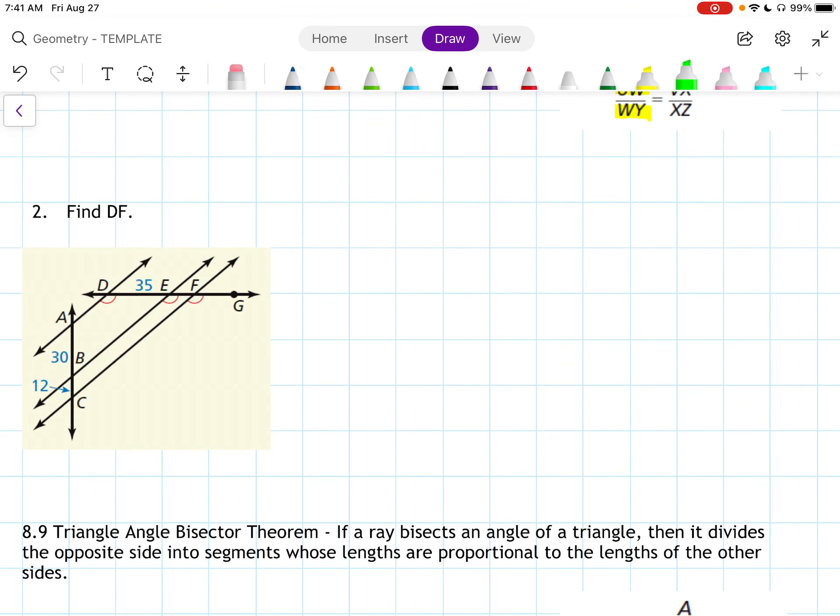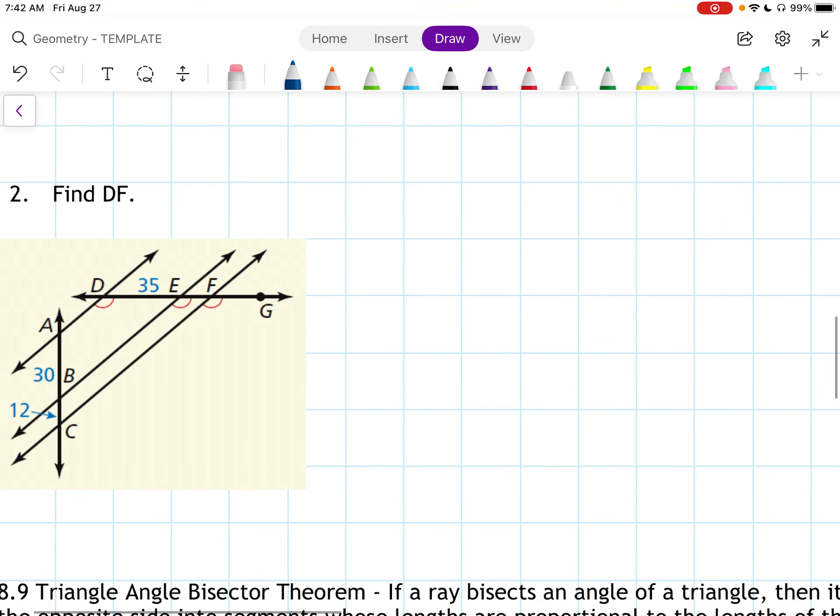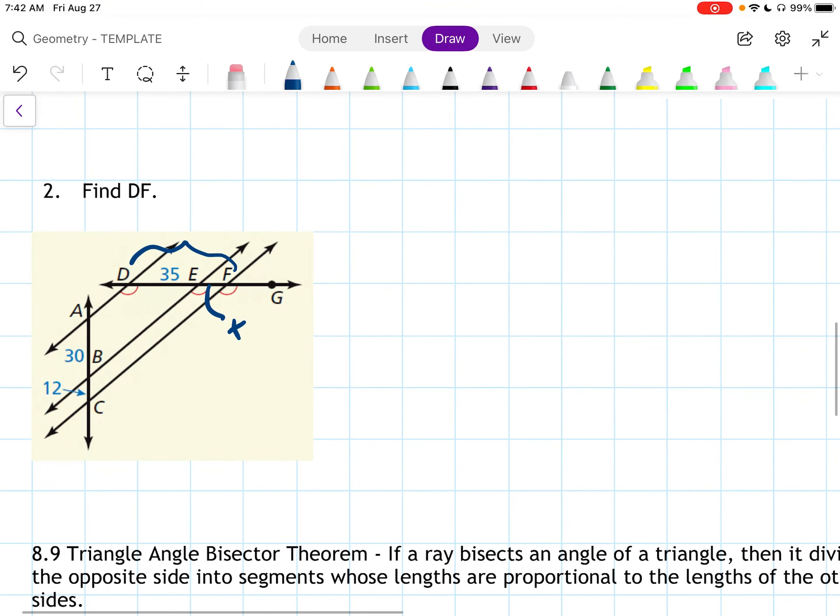So part two, find DF. So DF is this whole thing here. What I'm going to do is I'm just going to find X first and then I will add X and 35 together. So our three parallel lines, they're kind of slanted to the right, right?